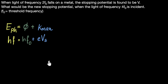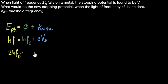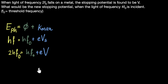Pause the video and see if you can solve it yourself first. When the frequency F is 2F₀, in the first case we get 2HF₀ equals H times F₀ plus E times the stopping voltage V. Simplifying, V equals 2HF₀ minus HF₀ divided by E, which gives V equals HF₀ divided by E.